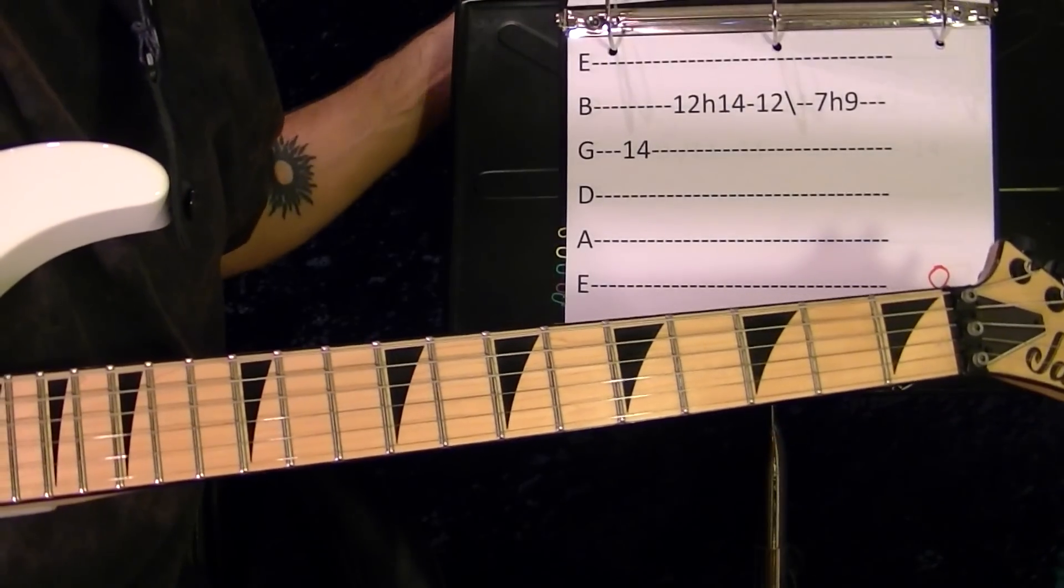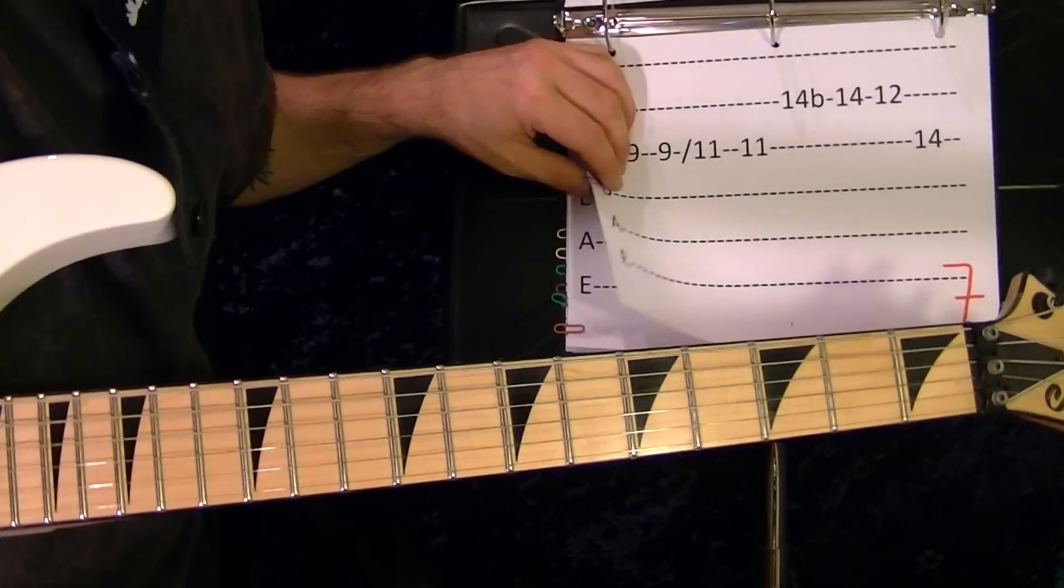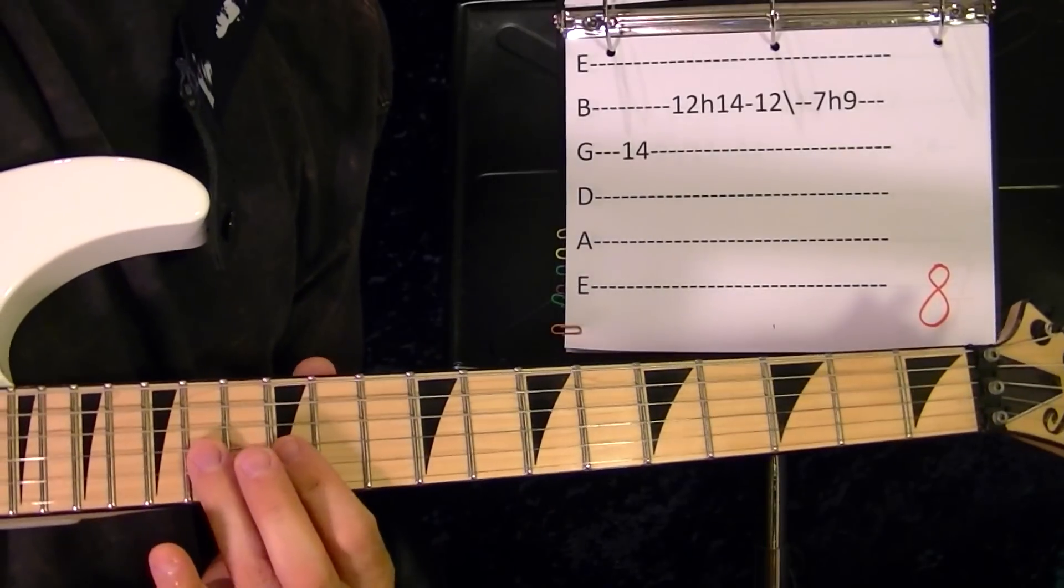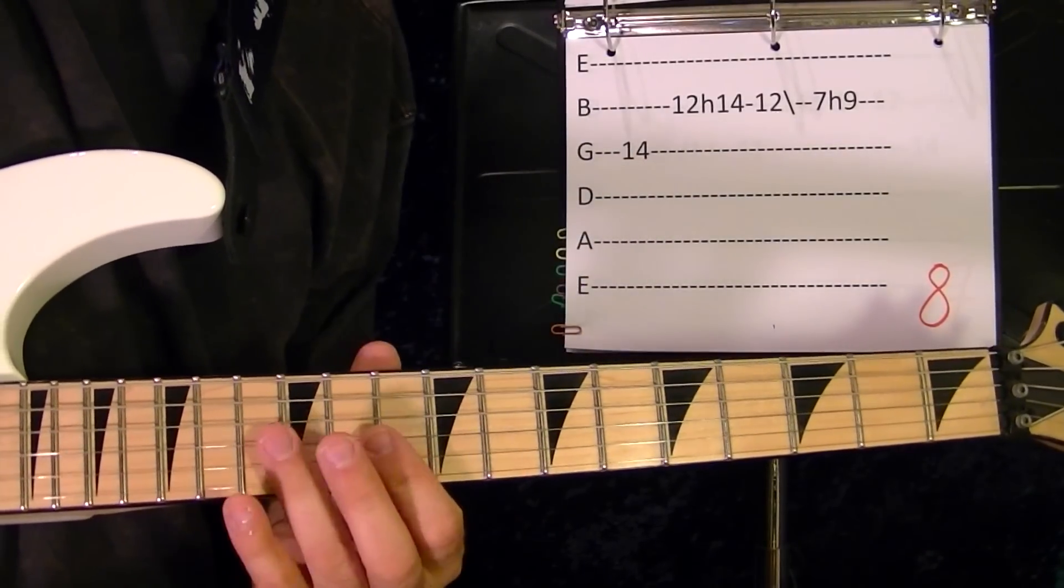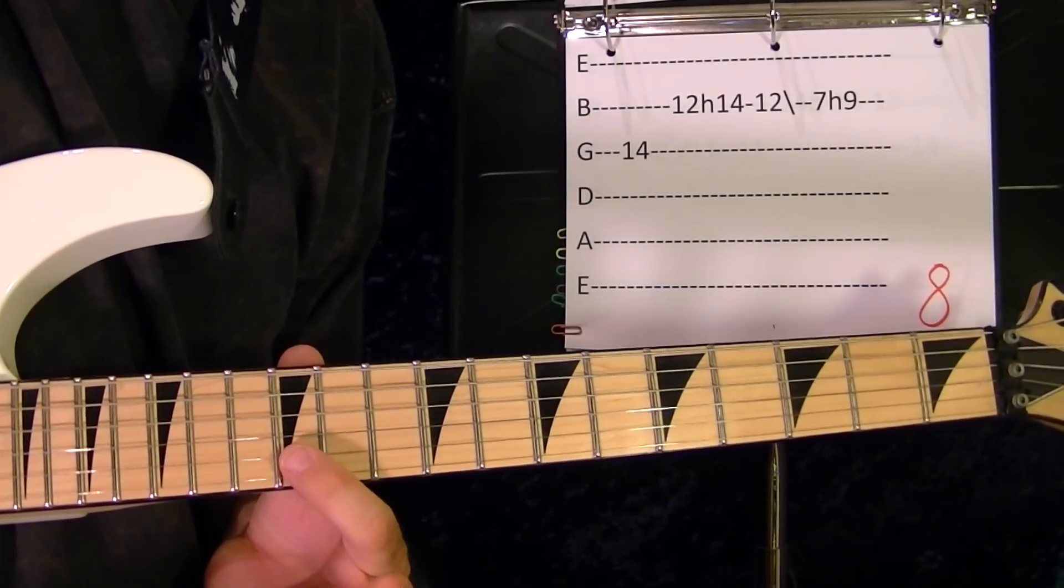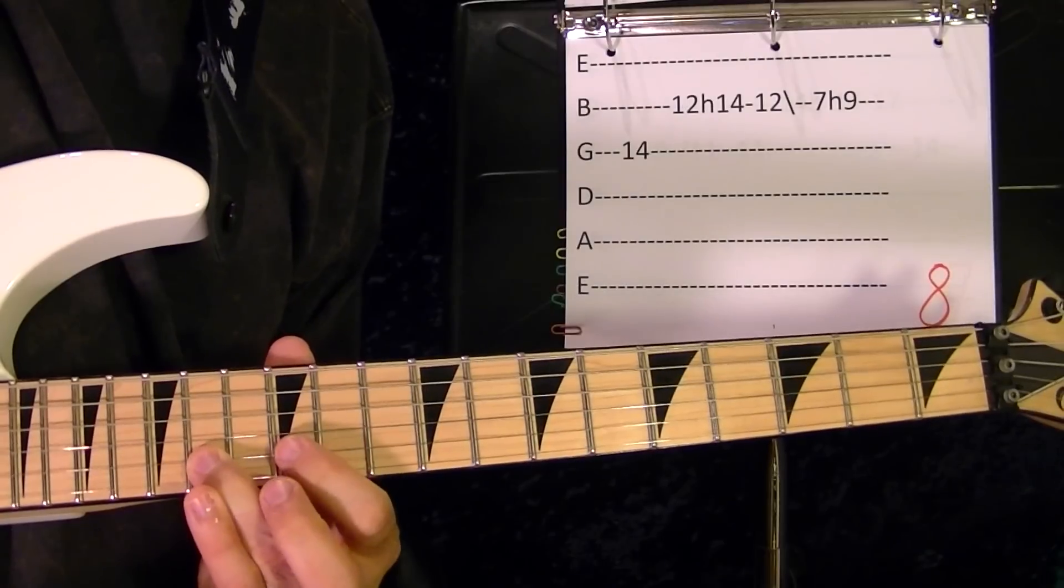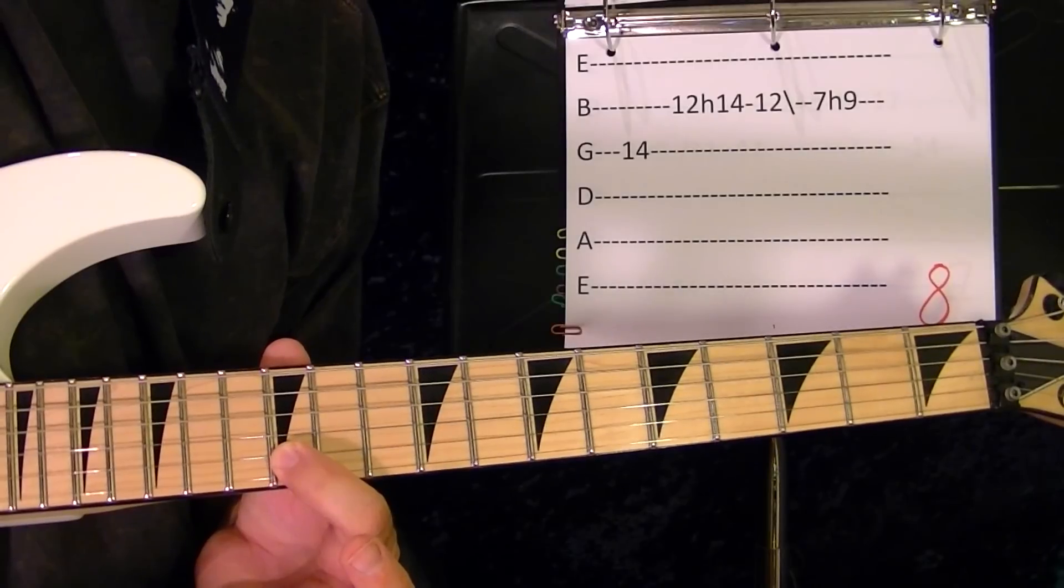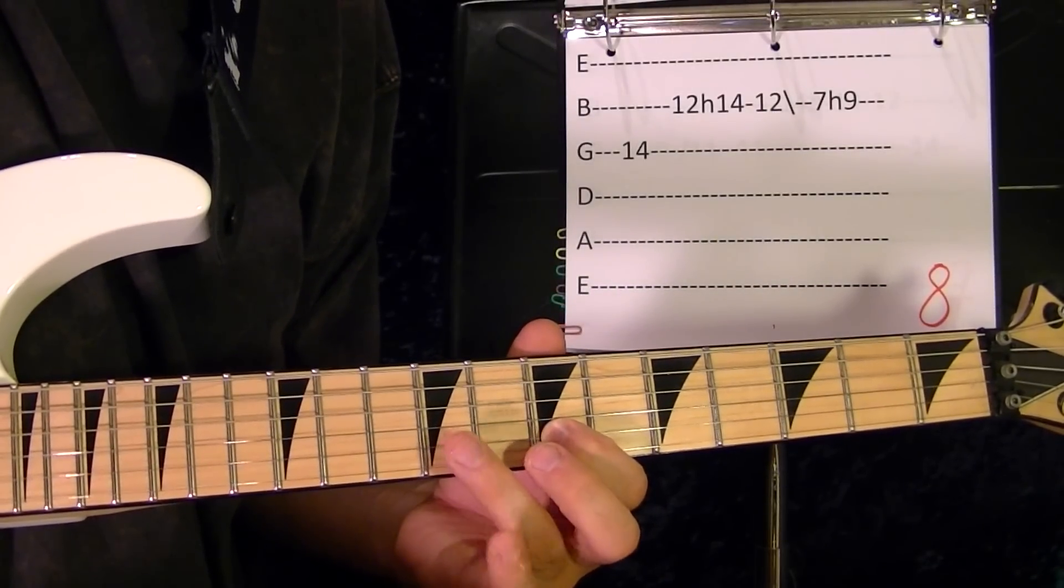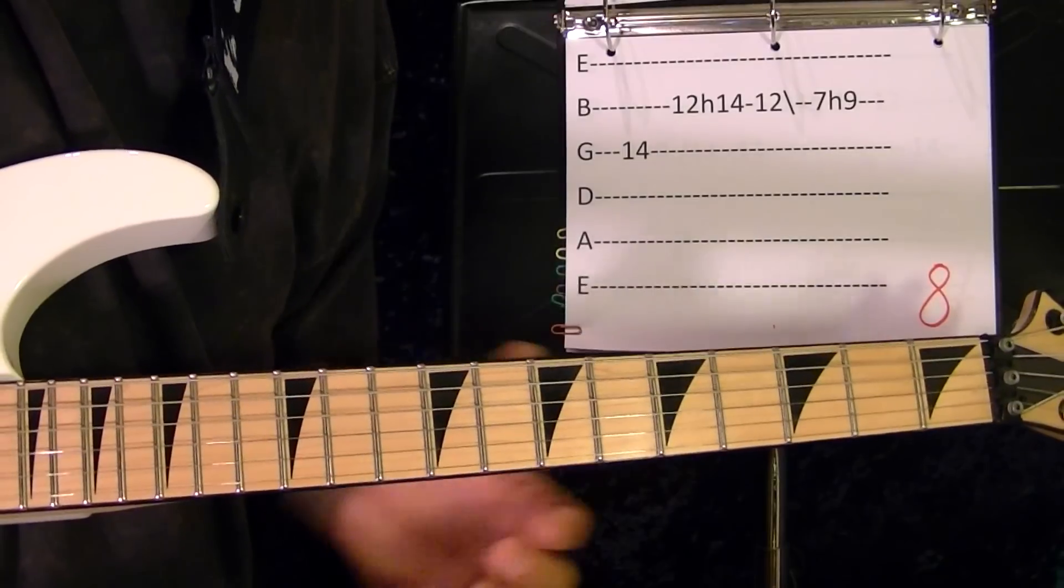And that was riff number seven, which you'll play twice more. Riff number eight: third string fourteenth fret, second string twelfth hammer on to the fourteenth, twelve, second string slide out of the seventh, hammer on to the ninth. So that part again, riff number eight.